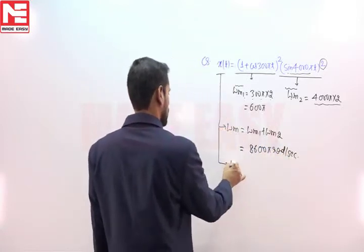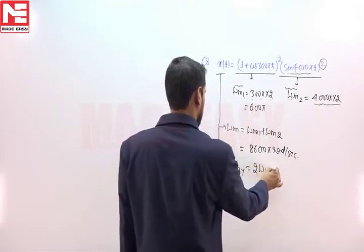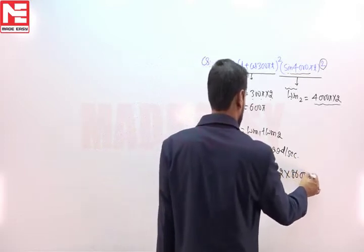To calculate Nyquist rate, we have to multiply omega_m by 2. So it will be equal to 2 times 8600π.